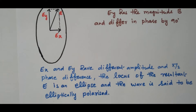So in this video we discussed five types of polarization: only Ex available means polarized in x-direction; only Ey available means polarized in y-direction; if both are available and varying with time, it is linearly polarized; if both are available with the same magnitude and 90-degree phase difference, it is circular polarization; if both are available with different magnitudes and 90-degree phase difference, it is elliptical polarization. Thank you.